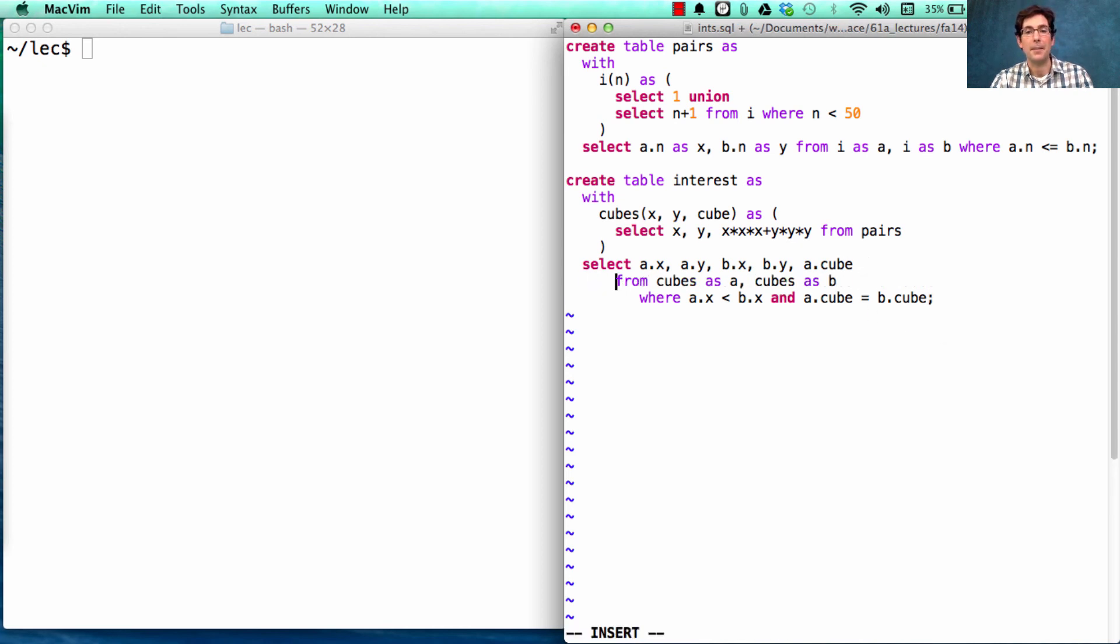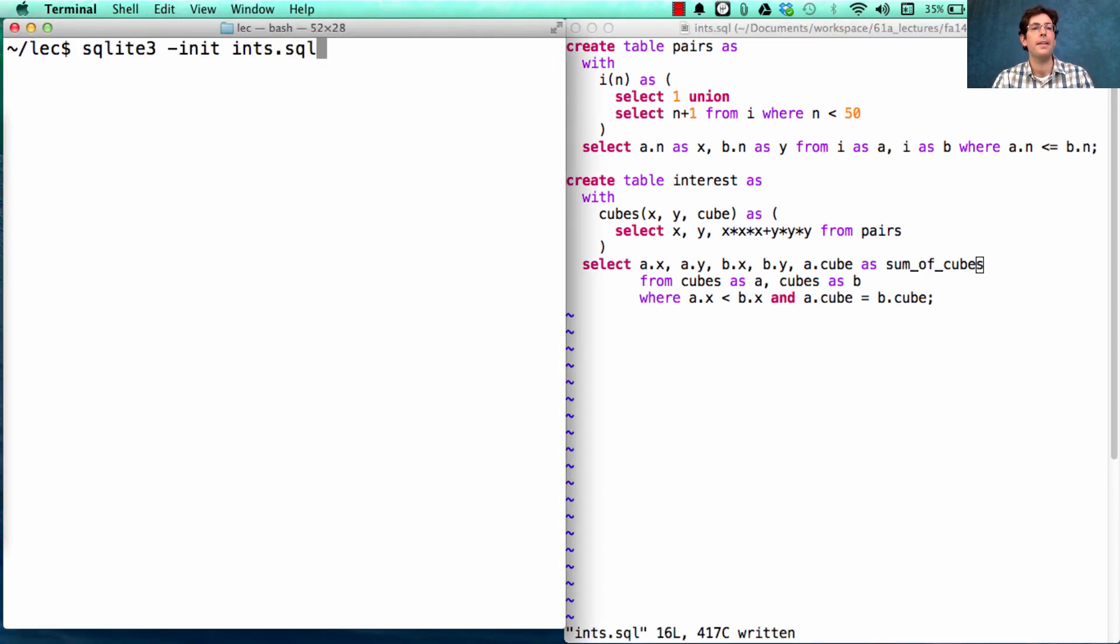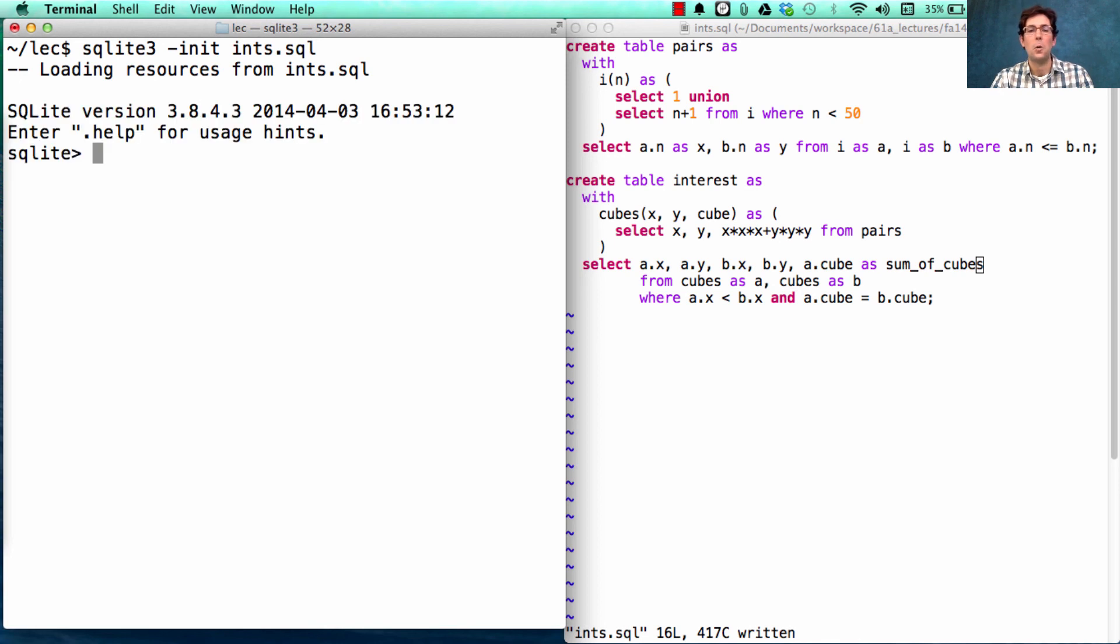So let's give these columns some names so that we can refer to them. In particular, let's call this the sum of cubes. Then, we can select star from the interest table, order by the sum of cubes.